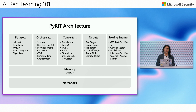Then we have converters. For example, you may have some text you want to translate to another language, or you may have text that you want to base64 encode to utilize as part of a payload. These are some examples of converters that we have built into Pirate. Then we have the targets — this could be a text target, an image target, a text-to-speech target, or the Gandalf target that we will be demoing in a little bit, and this is how we start to interact with things that are outside of Pirate.